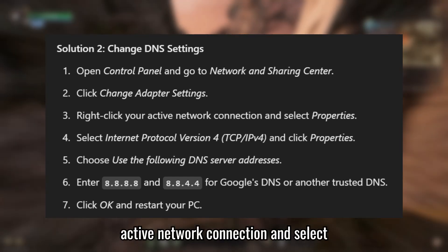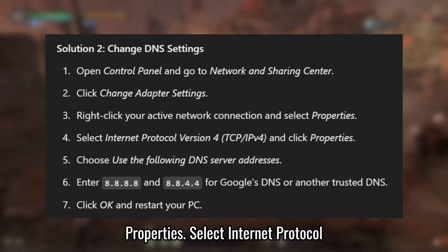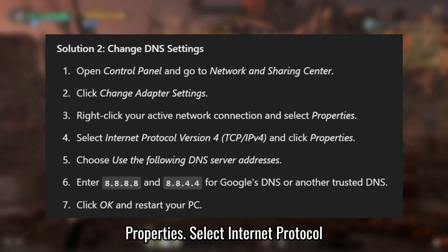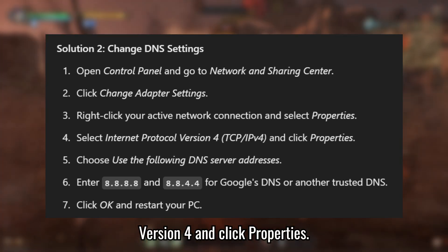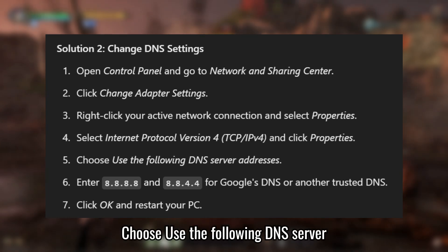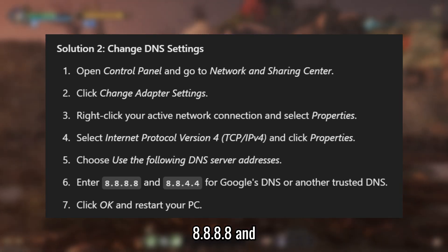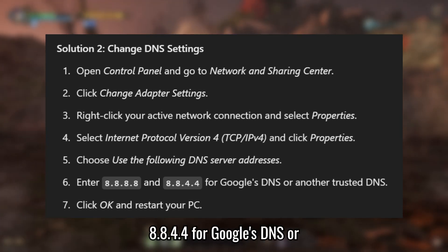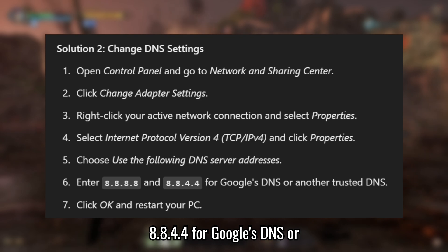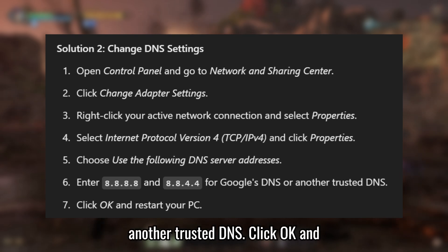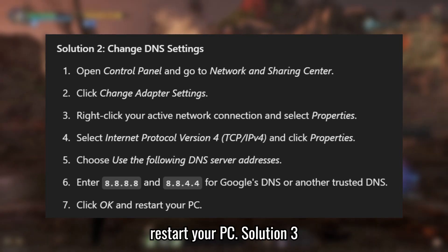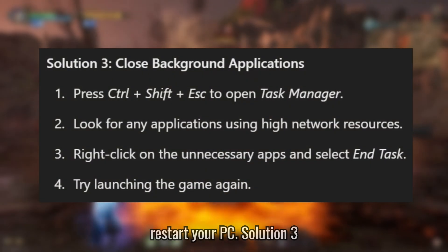Right-click your active network connection and select Properties. Select Internet Protocol Version 4 and click Properties. Choose 'Use the following DNS server addresses' and enter 8.8.8.8 and 8.8.4.4 for Google's DNS or another trusted DNS. Click OK and restart your PC.